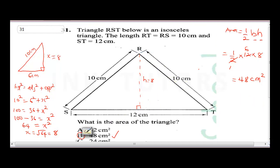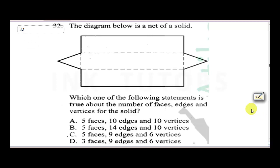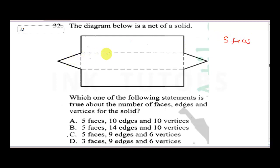Question 32: the diagram is a net of a solid. Which statement is true about the number of faces, edges, and vertices? Let's count the faces. When folded, there is no top. The base is face 1, and then the back of each triangle gives faces 2, 3, 4, and 5. So we have 5 faces total.